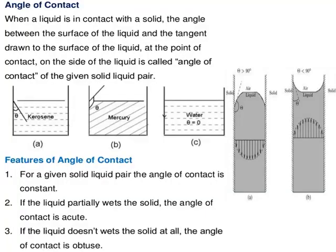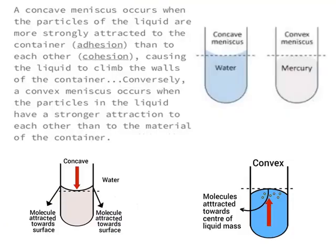Looking at this figure, we see concave and convex menisci. Convex molecules are attracted towards the center of the liquid mass. Concave attributes are attracted towards the surface. For water we see a concave meniscus, and for mercury it is also referred to as concave.